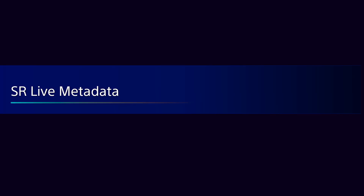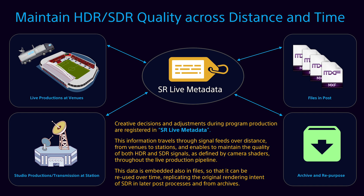We are now introducing a technology we call SR-Live metadata. This metadata registers the creative decisions and adjustments of the cameras during program production. This metadata packet can travel over SDI interfaces, from venues to stations, and it is used to maintain the quality of both HDR and SDR signals as defined by the camera shaders. This data can also be stored in the header of recorded files, so it can be reused over time to replicate the rendering intent of SDR for post-production and archive.